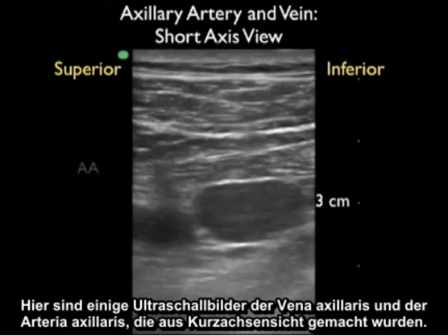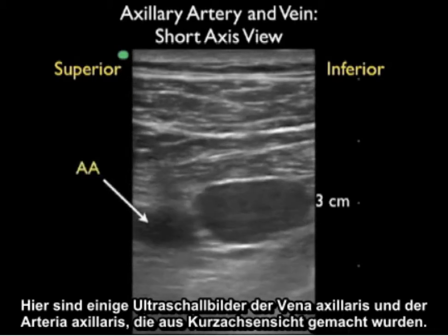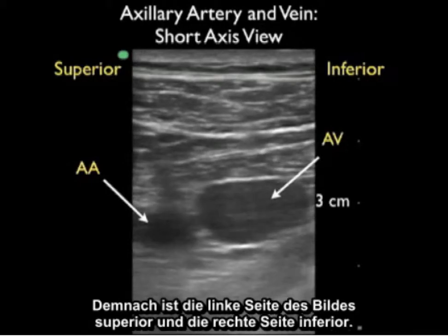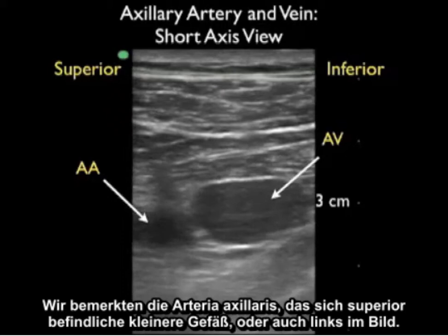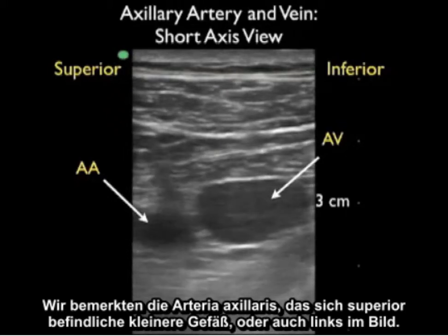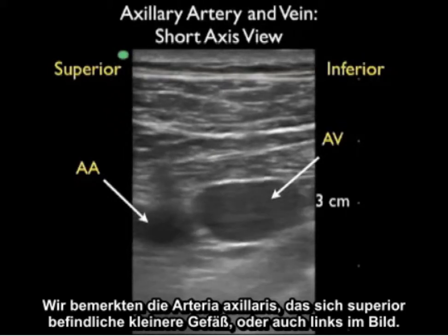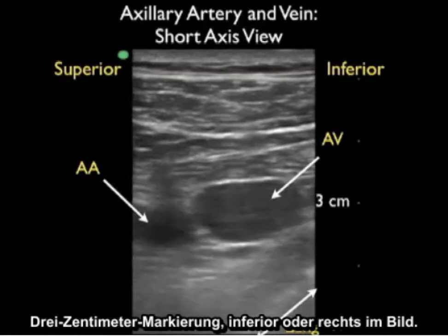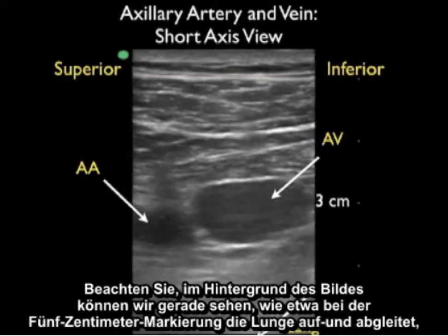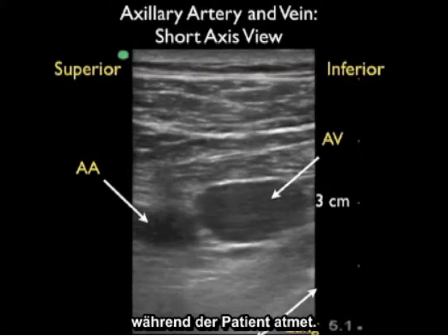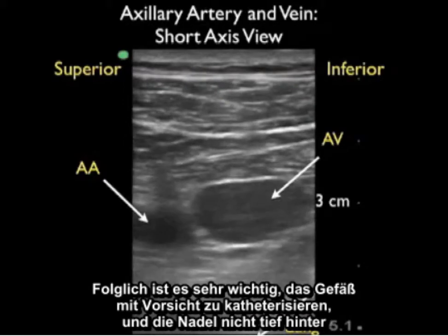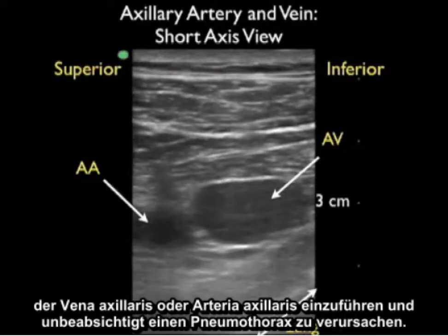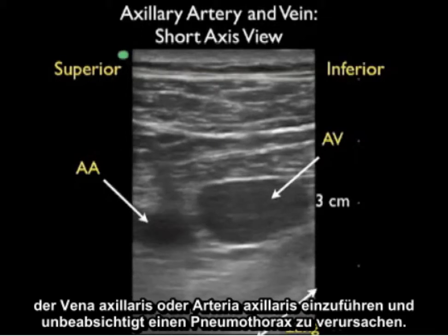Here are ultrasound images of the axillary vein and artery taken from the short axis view, with the probe marker oriented towards the patient's head. To the left of the image is superior and to the right is inferior. The smaller axillary artery is seen superior or towards the left. The larger axillary vein is at about the 3 cm mark, inferior towards the right. Towards the back of the image at about the 5 cm mark, lung sliding is visible as the patient breathes — it's very important not to pass the needle deep past the axillary vein or artery to avoid an inadvertent pneumothorax.